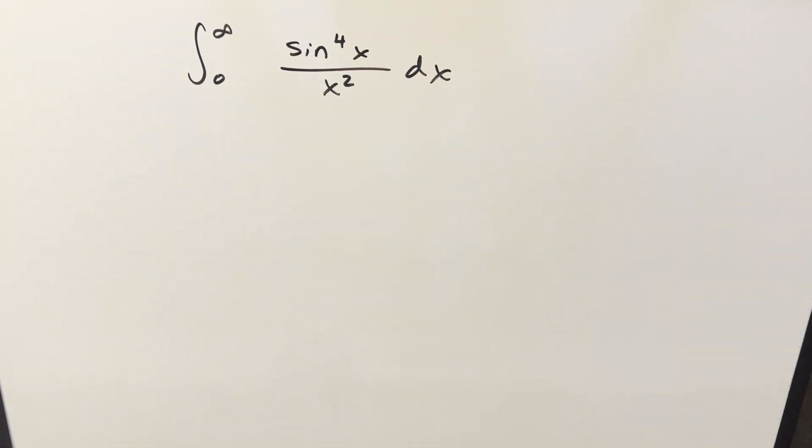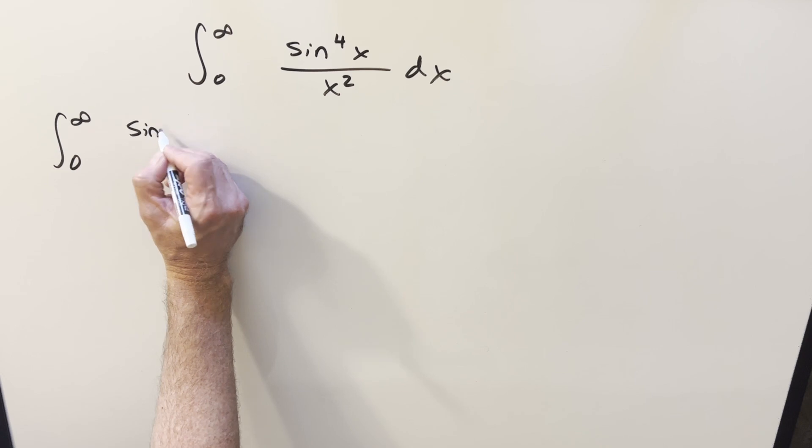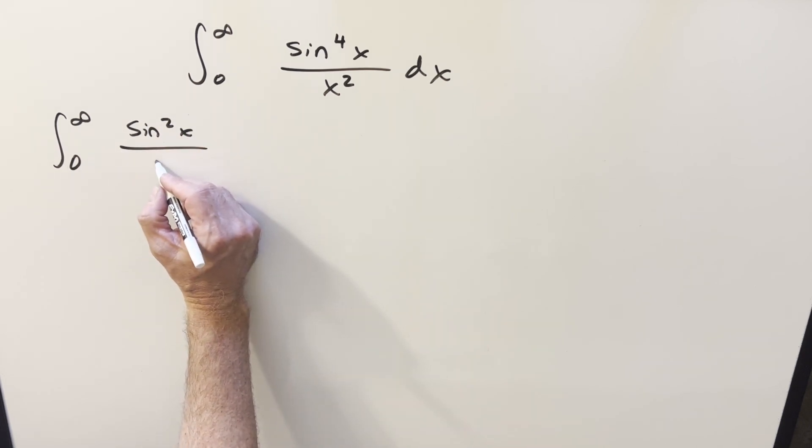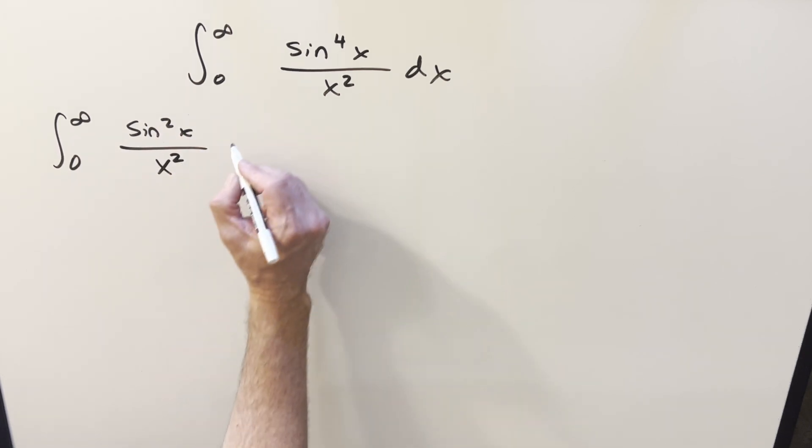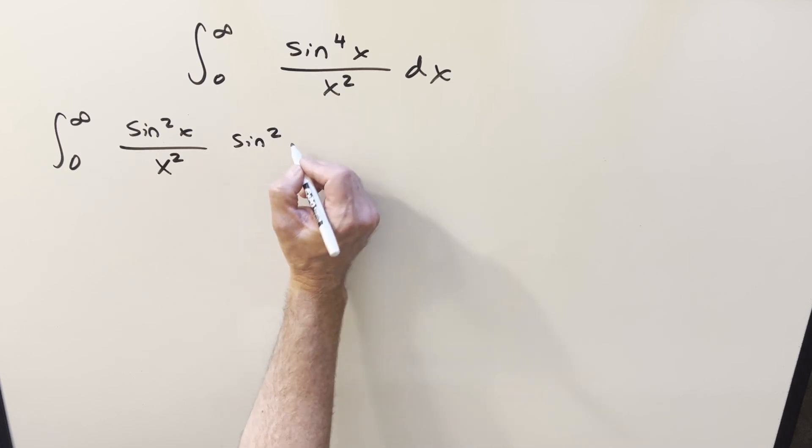Okay, I was really liking this one just because I think this is going to go really quick if I just split it up a certain way. So with that numerator, that sine to the 4th, let's just break it up like this and write it as sine squared over x squared, and then multiply it times sine squared x.